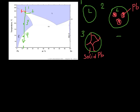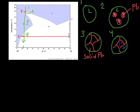As we continue to cool further, we still have the solid lead structure, but now we start to precipitate out a tin-rich phase that begins to grow within our lead grains.